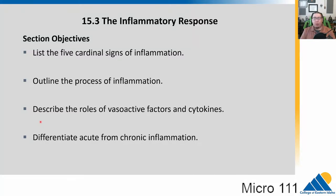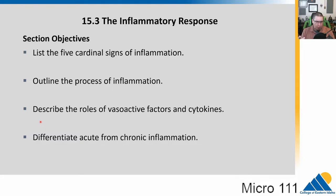In 15.3, we're going to talk about a very important process of the adaptive immune system called the inflammatory response. You probably have heard of inflammation. We're going to lay out what the signs of it are so that we can recognize it, and also talk about what's going on in there. We tend to think of inflammation as bad, but there are very necessary things going on in inflammation. It can be bad though when it goes on too long, so we will talk about chronic inflammation.